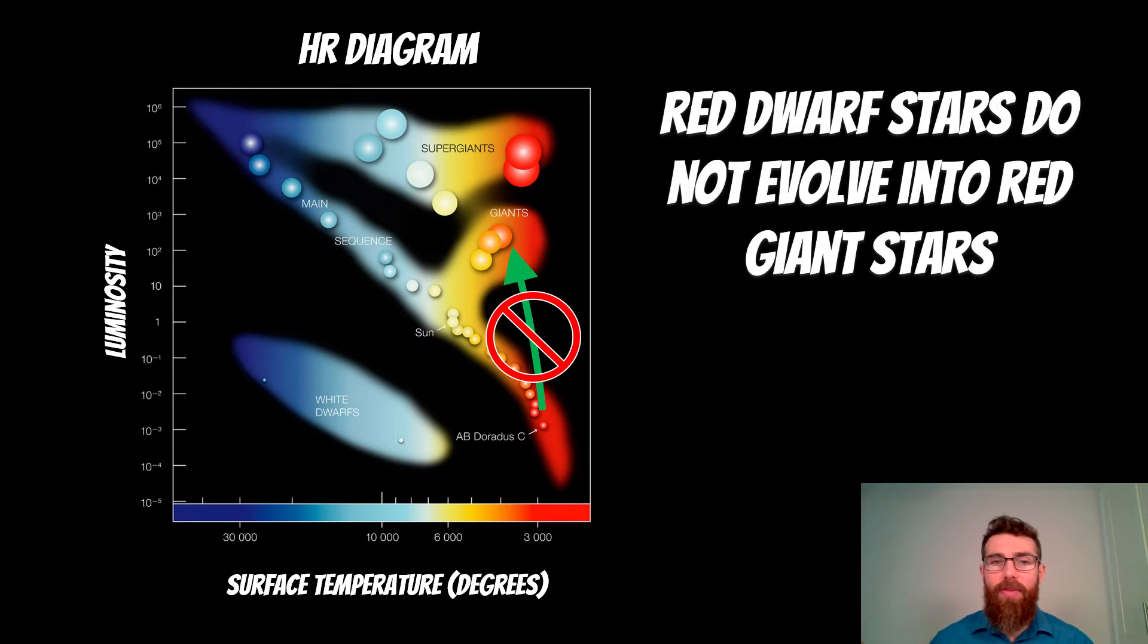But if we go to the bottom end of the HR diagram on the main sequence, we have our red dwarf stars. Now they don't evolve into red giants, there's no evolutionary path for those red dwarfs into red giants. So why might that be?